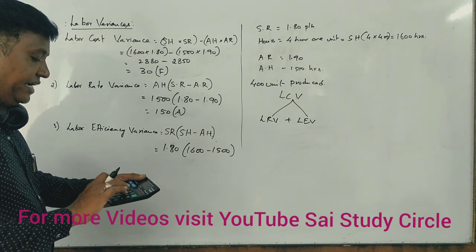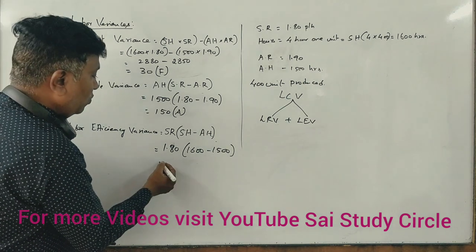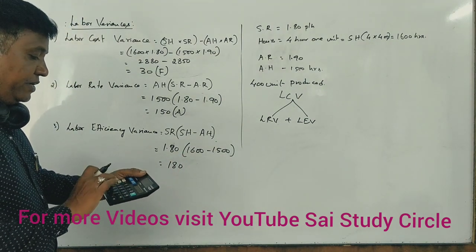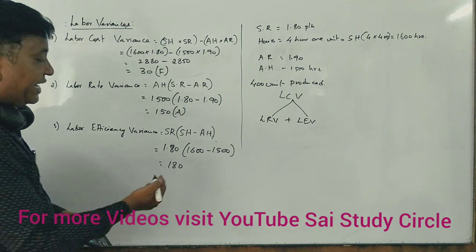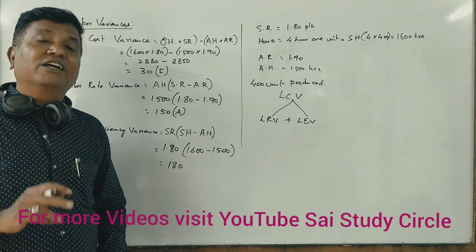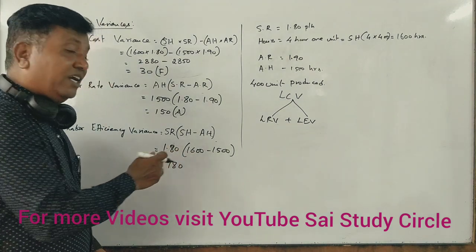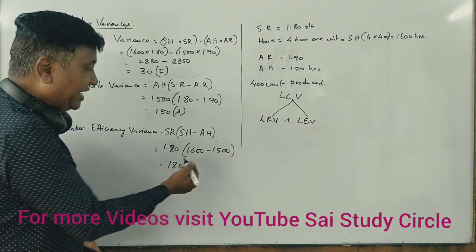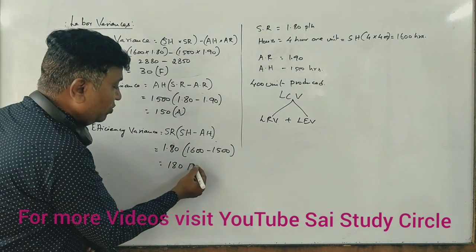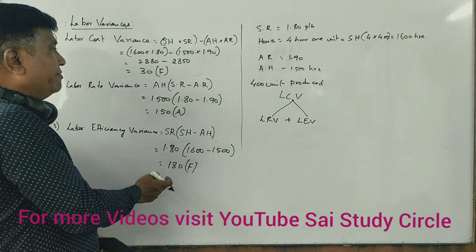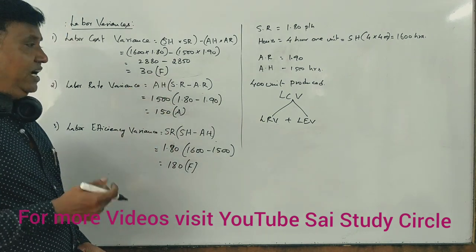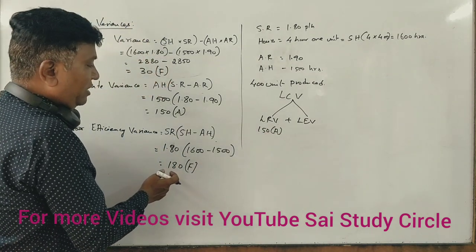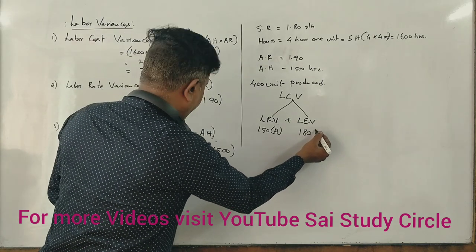1,500, 100 into 1.8 is 180. Why is it favorable? The variance: 500 into 1.8 is 150, and the labor efficiency variance is 180.